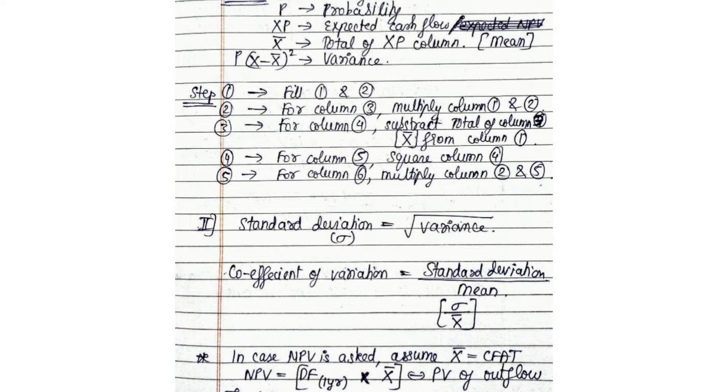Then in the question they may tell you to find out standard deviation — standard deviation will be the square root of variance. They may also tell you to find out the coefficient of variation, which is standard deviation divided by mean, or standard deviation divided by x-dash. Sometimes NPV may also be asked. If NPV is asked, you have to take x-dash as your CFAT — your cash flow. Multiply it with the discount rate for each year and then subtract the present value of cash outflow to get your NPV.